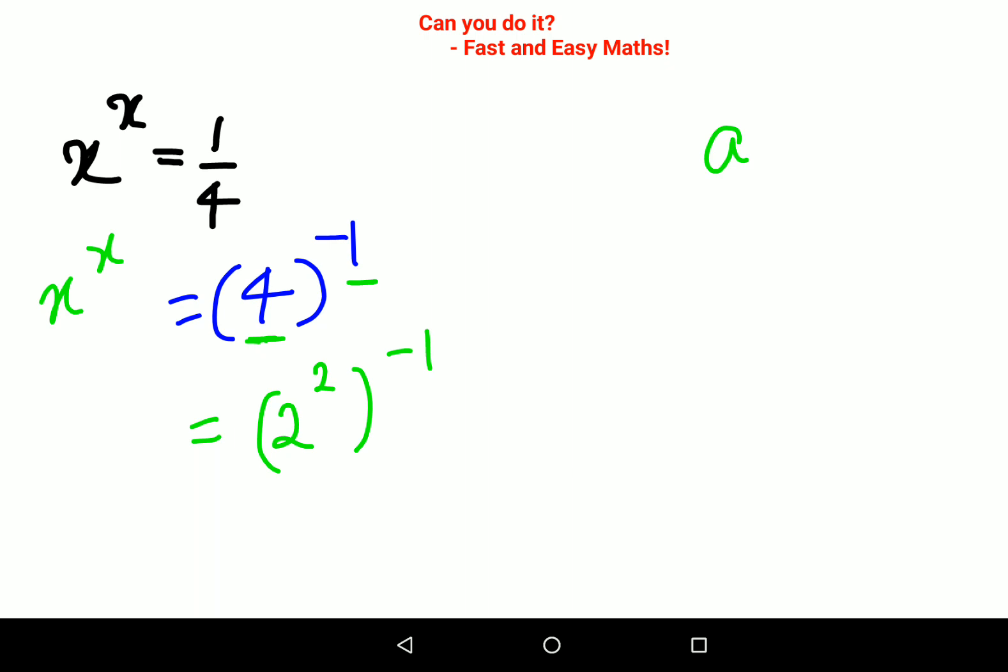Now, as you all know, a raised to m, the whole raised to n is a raised to m times n. So this now comes out to be 2 raised to 2 times minus 1, which gives you minus 2.